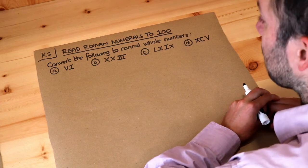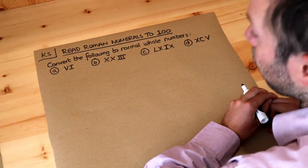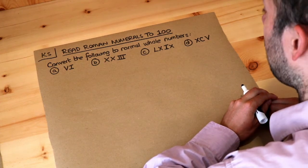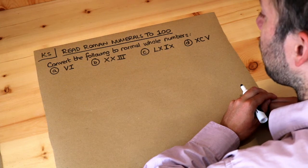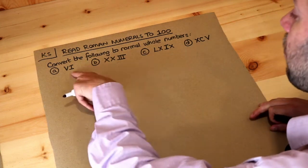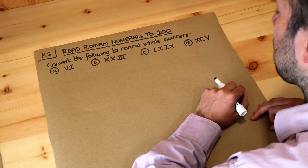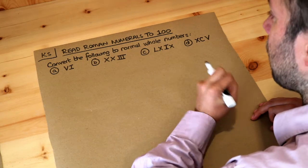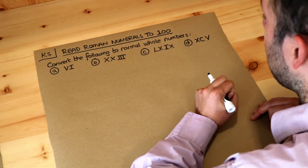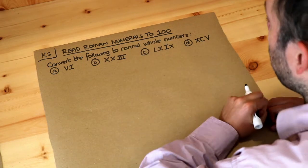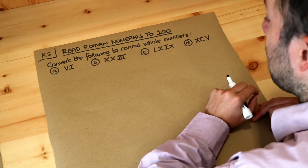Hello and welcome to Dr. Rosemath's key skill video on reading Roman numerals up to 100. We have these different numbers which are in something called Roman numerals — that's the number system that the Romans used — and we want to convert them to normal numbers, like 100 for example.